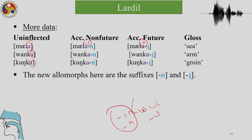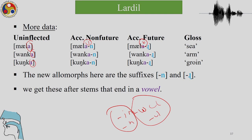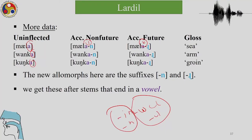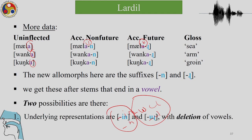We have these allomorphs for the accusative non-future and accusative future. A common thing seen in languages is that when a vowel-ending form is followed by a suffix also beginning with a vowel, there may be deletion of one of the vowels because the structure where two vowels occur consecutively is often avoided. Languages try to have one syllable there instead of two. Vowel-initial syllables are avoided most of the time, which is why we have vowel deletion, and that is why E is deleted because of the final R in the uninflected form.